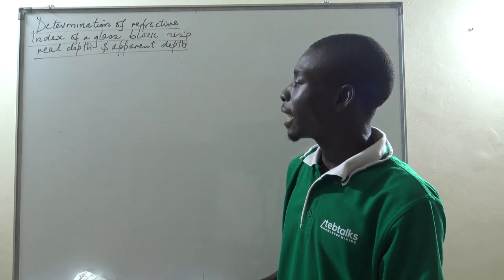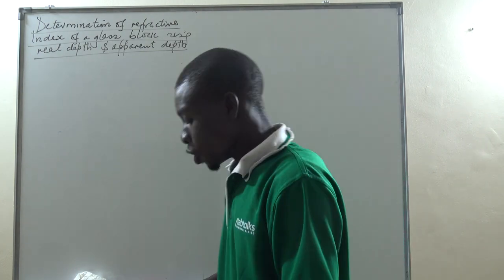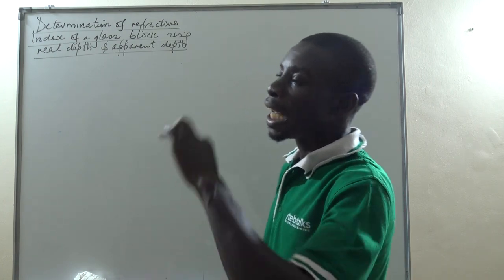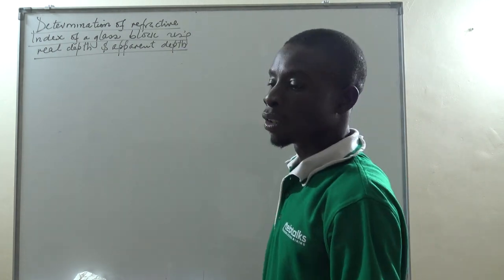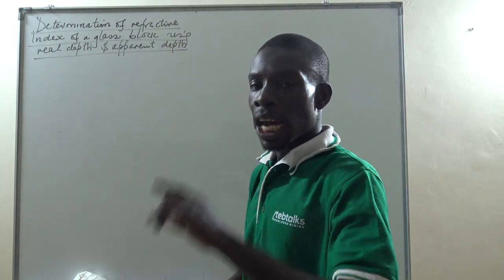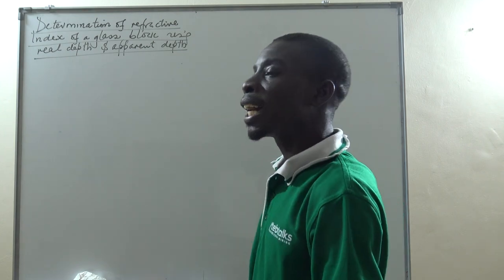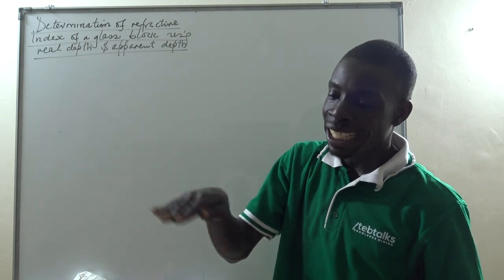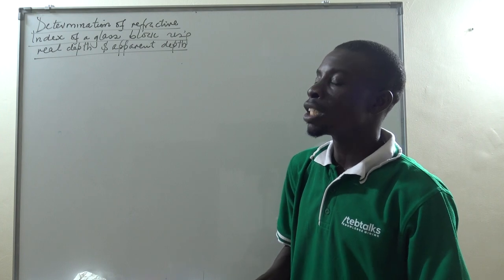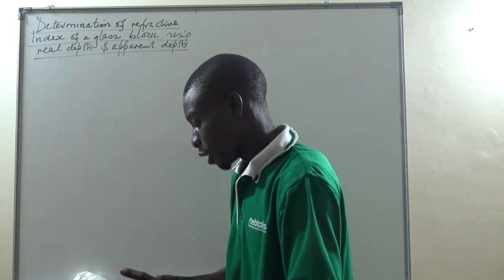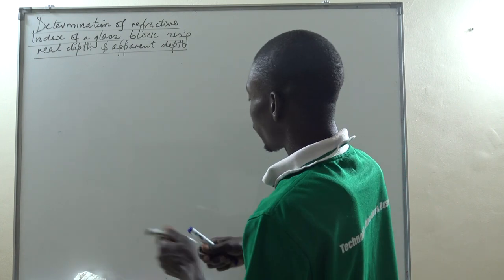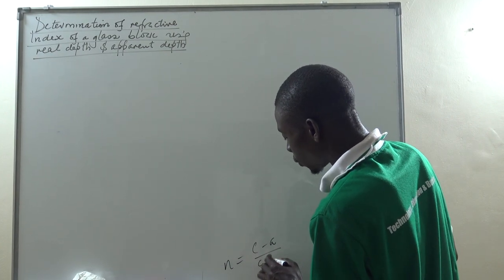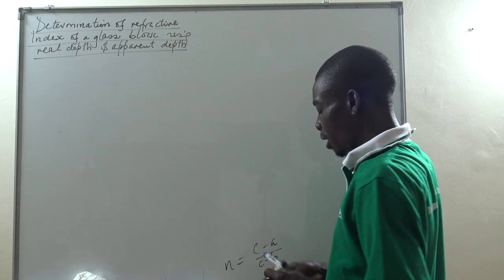After capturing that height, what you now do is spread some lycopodium powder on top of the glass block, then adjust the traveling microscope until you see the powder on top of the glass block clearly. Measure that height as C. Then the refractive index can be determined from: n equals C minus A, over C minus B.